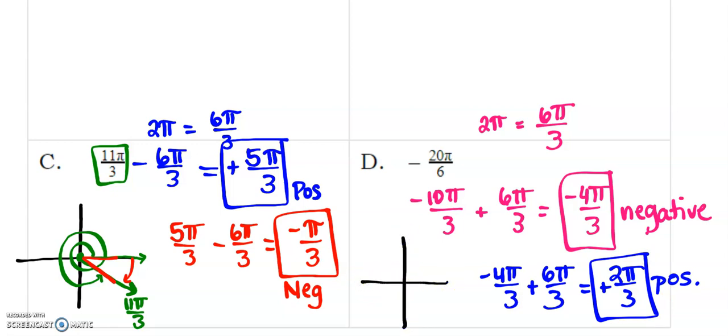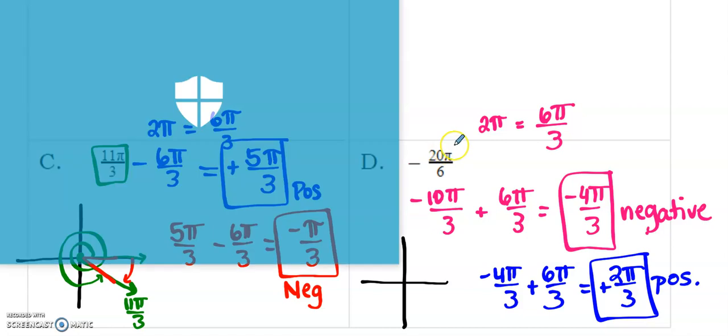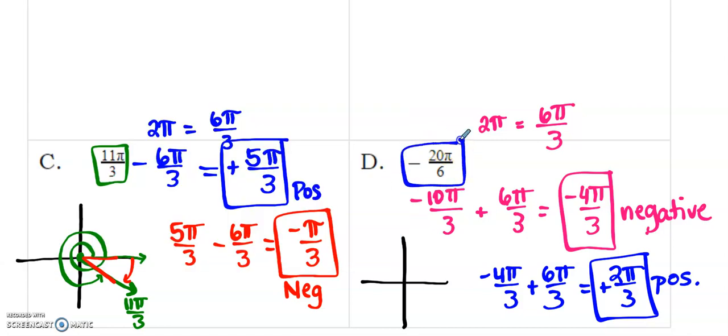And just to kind of give you a visual, again, let's figure out where this would land. So, I'm going to draw the original one. I'm going to draw this guy right here. That one would have been one whole rotation around, and then negative 4 pi over 3 lands in the second quadrant. Kind of right here. And then, if you notice, 2 pi over 3, that would land right here, going the positive route. And negative 4 pi over 3, that's just one rotation into that second quadrant.